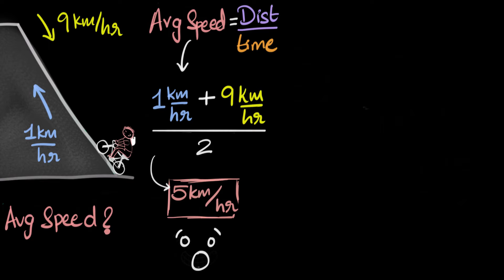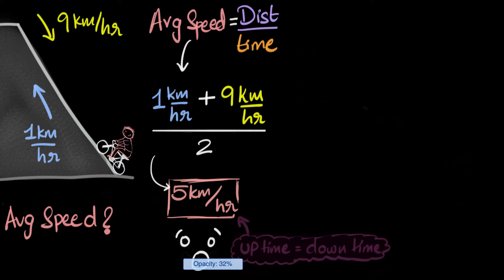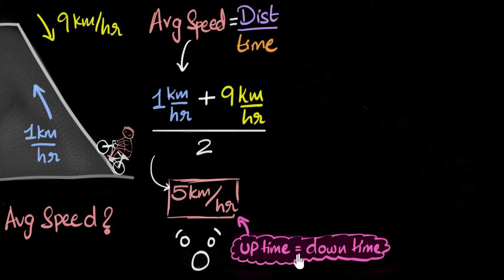Why is this method wrong? In short, this method assumes that the time it took for the bike to go up and come back down is exactly the same. In other words, this answer is only correct provided the uptime is exactly equal to the downtime. There are multiple ways to see why, but one way I like is by taking examples.